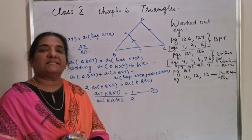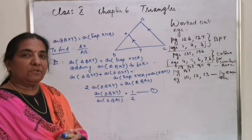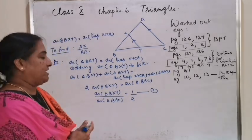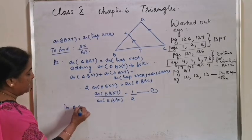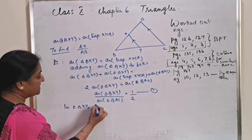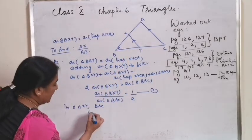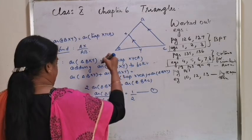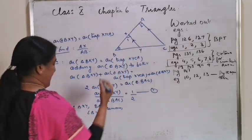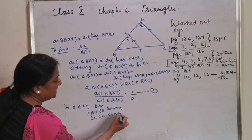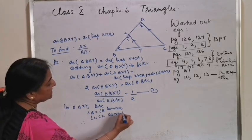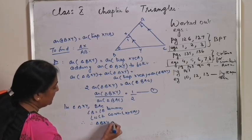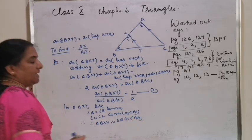Before applying the area theorem, prove the triangles are similar. In triangles BXY and BAC: angle B equals angle B (common), and angle BXY equals angle BAC (corresponding angles, since XY is parallel to AC). Therefore triangle BXY is similar to triangle BAC by AA similarity.